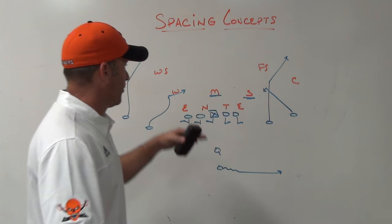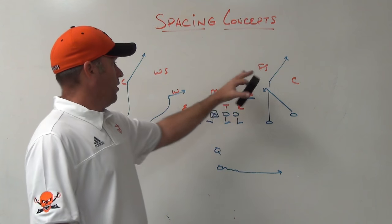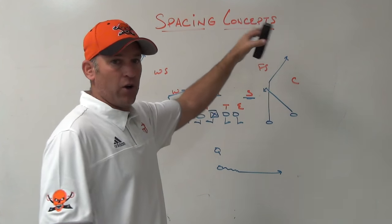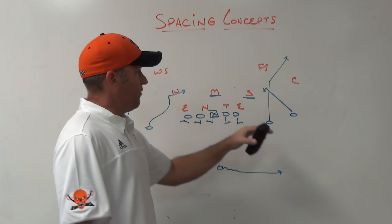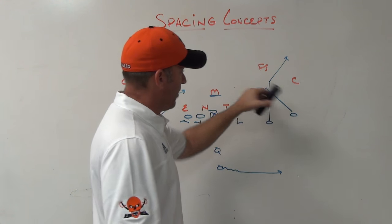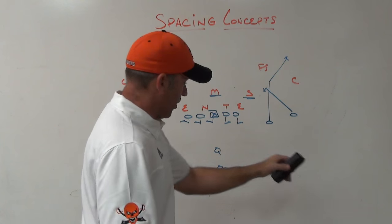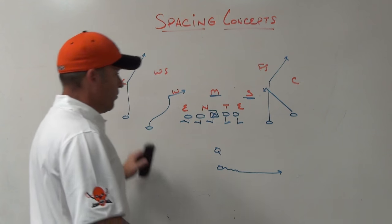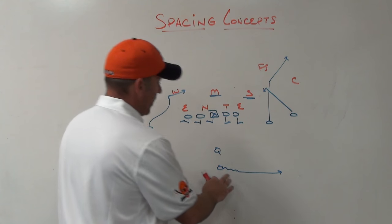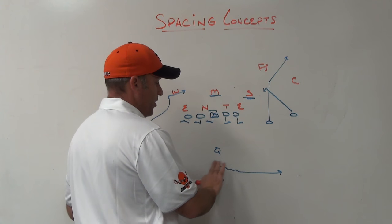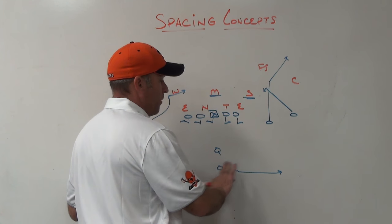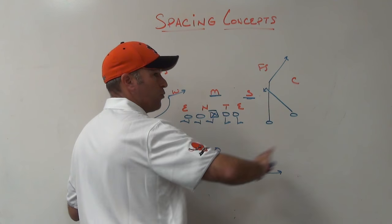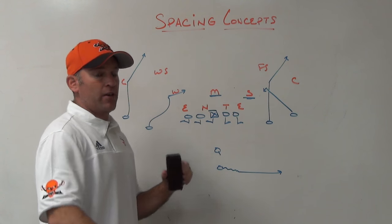What I've got drawn up first here is our three-man snag concept — we've talked about it a lot before — where we've got a snag by one, a corner by two, and we're working a flat route by the back. What we like to do is push the back out pre-snap with a little bit of motion to get him out there, because the width is what we're trying to attack on the defense.